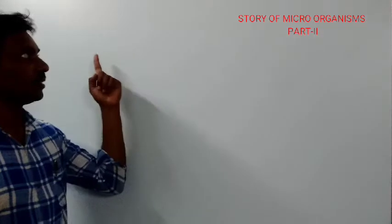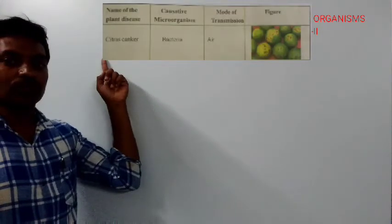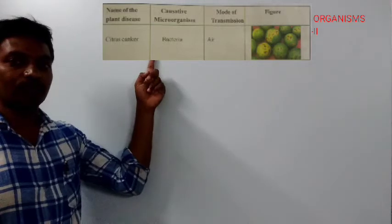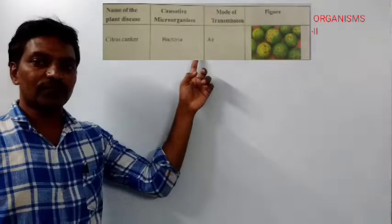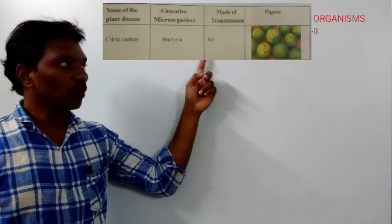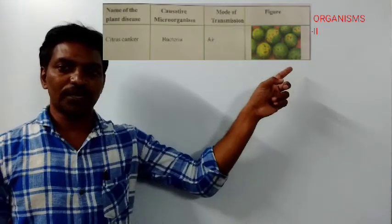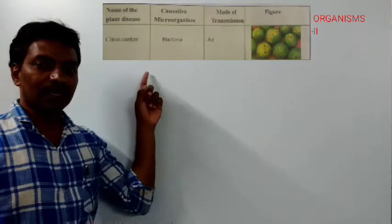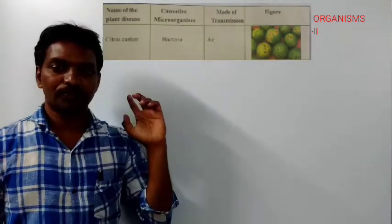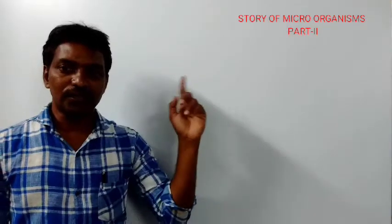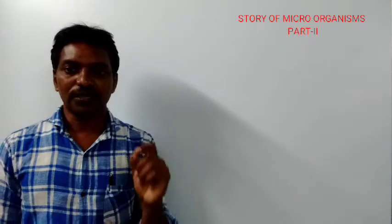The first disease I am going to show you is Citrus Canker. The causative micro-organism is bacteria. The mode of transmission is caused by air. Look at the picture — above the lemon, some spots are there which are caused by this bacteria, and that is called Citrus Canker disease. In the citrus family, we can see Citrus Canker disease; the symptoms can be seen on the lemon.